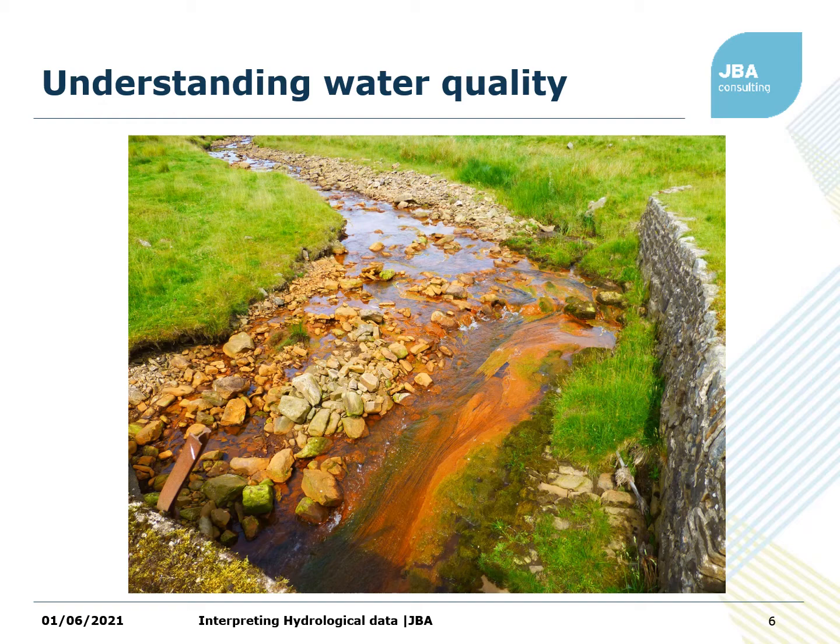Another point is around understanding water quality. It's easy to point the finger at a particular source of water quality as a problem. But if you understand how the groundwater is contributing, that might give you a good indication of what you could understand for water quality. Groundwater is often a different temperature and may have a different chemical signature, so it's a tool you can use to understand where the water is coming from in your catchment.